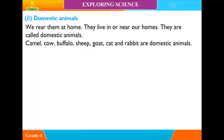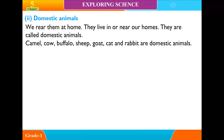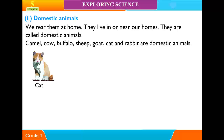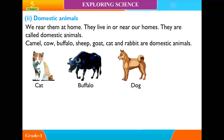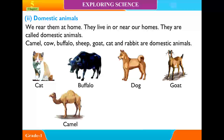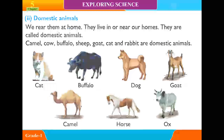Two, Domestic Animals. We rear them at home. They live in or near our homes. They are called domestic animals. Camel, Cow, Buffalo, Sheep, Goat, Cat and Rabbit are domestic animals. Other examples include Dog, Horse, and Ox.